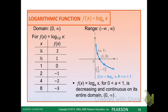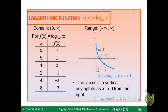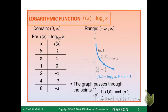Now we have an example where a is between 0 and 1, so maybe this is like log base 1/2 of x. Our domain is 0 to infinity and our range is negative infinity to infinity, and we are decreasing this time on our entire domain. The y-axis is still our vertical asymptote, and we still have those exact same three points to focus on for graphing.